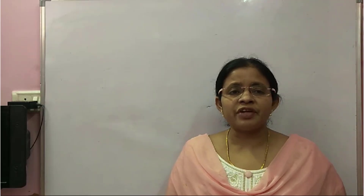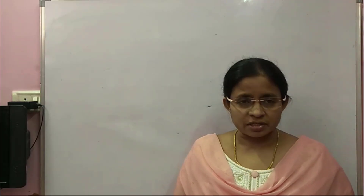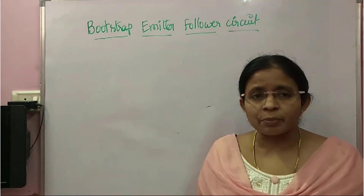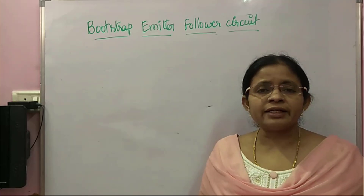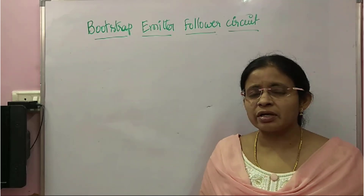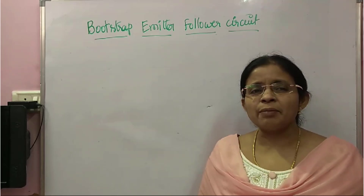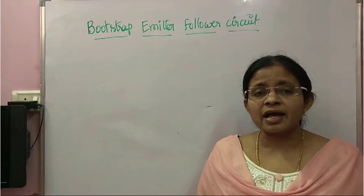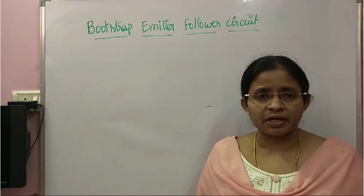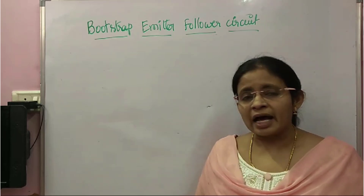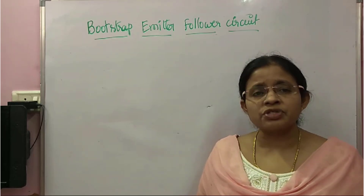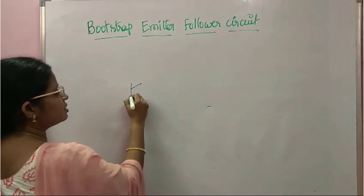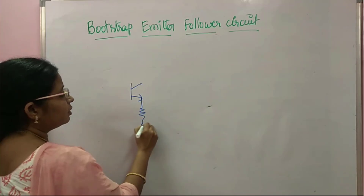Hello everyone, welcome to the video on bootstrap emitter follower circuit. In the last videos I explained about the Darlington emitter follower circuit and bootstrap emitter follower circuits. These two circuits come under high input resistance transistor circuits. We know the CC amplifier has high input impedance, but why are we going for the Darlington emitter follower or bootstrap emitter follower circuit? I'll explain here.